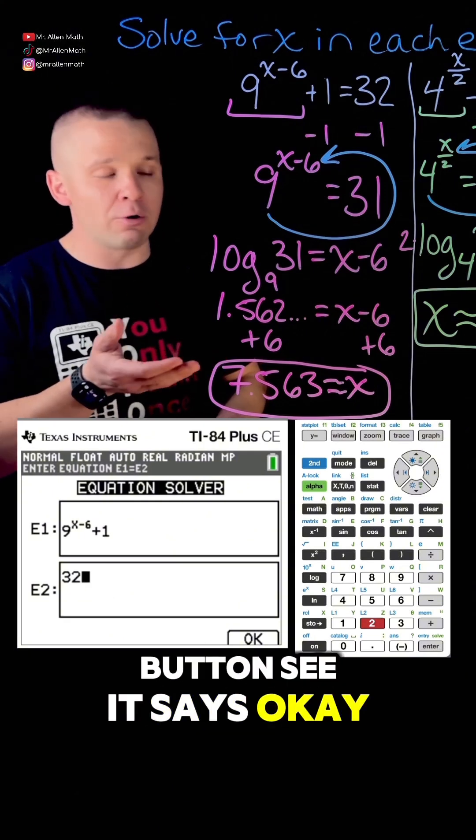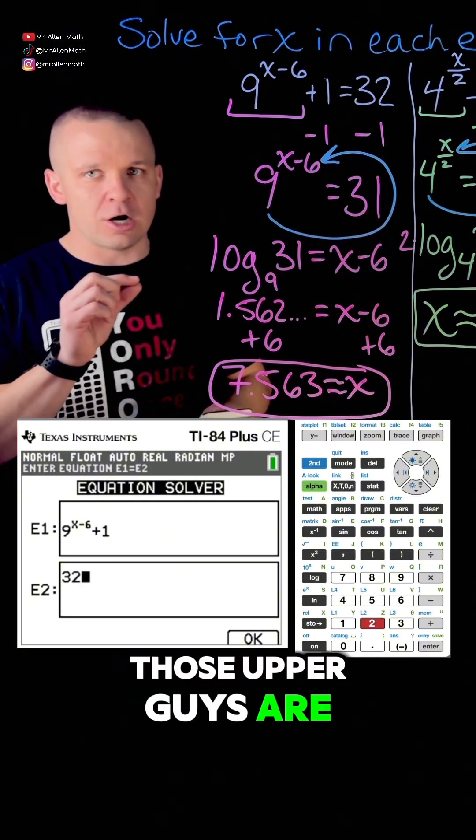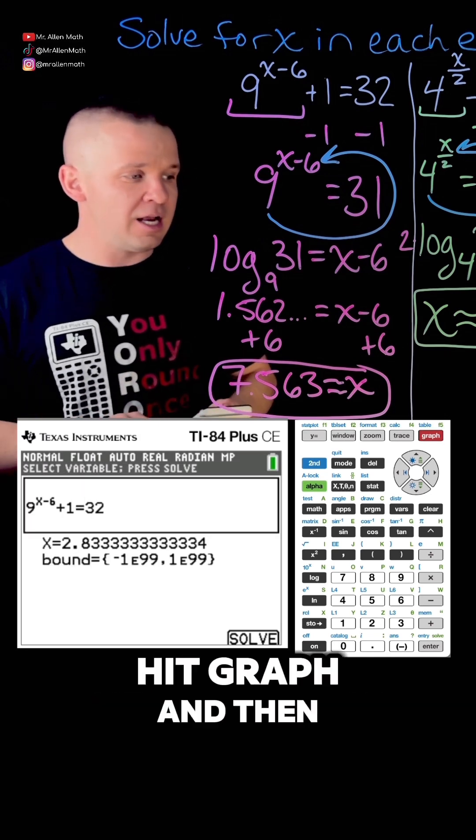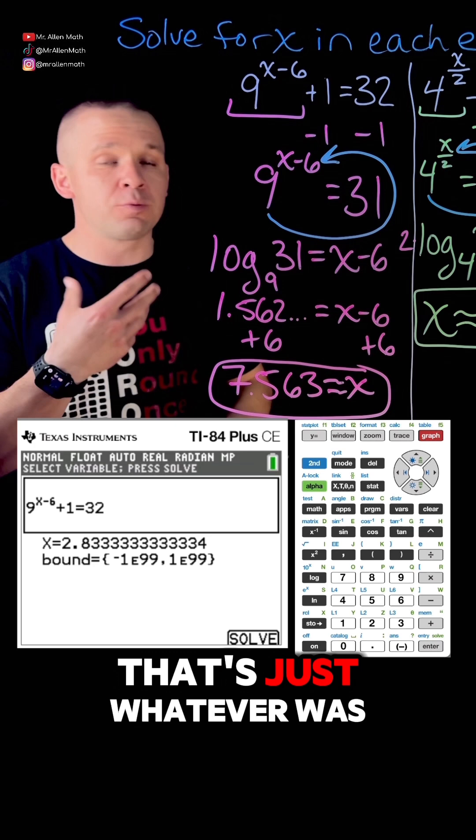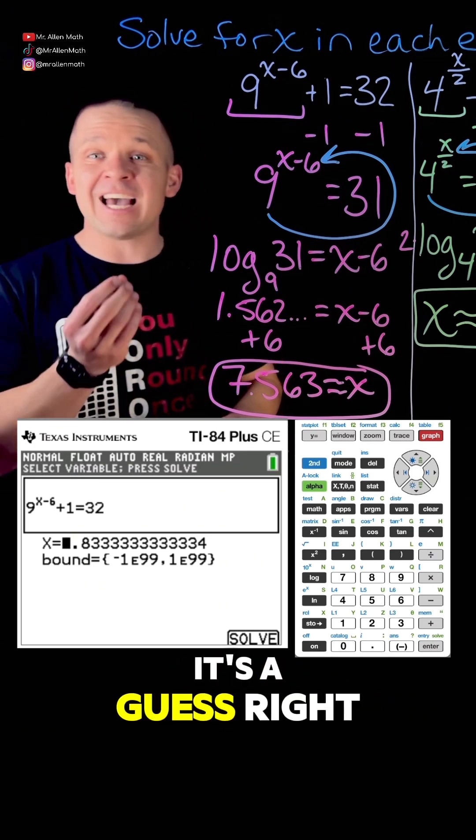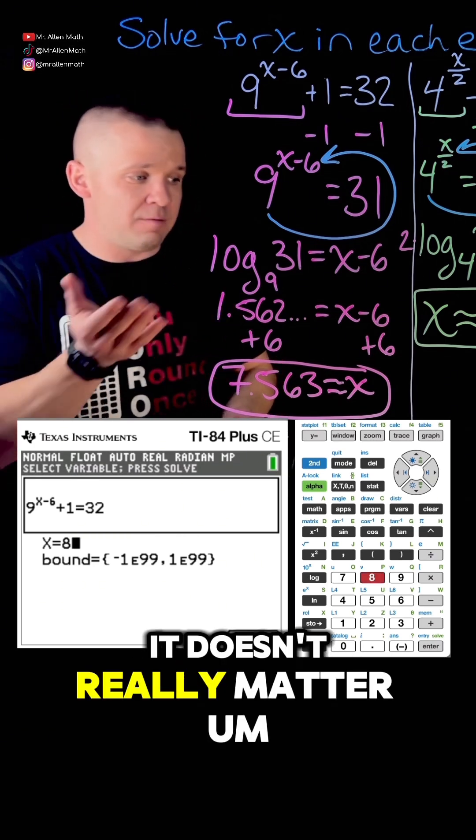hit the graph button. See how it says okay right there? Those upper guys are controlled by your top gray keys. Hit graph and then - right now it says 2.8, that's not our answer, that's just whatever was left in there before. It's a guess. You could even type in 8, it doesn't really matter. I'm just going to hit that and then hit graph to solve.